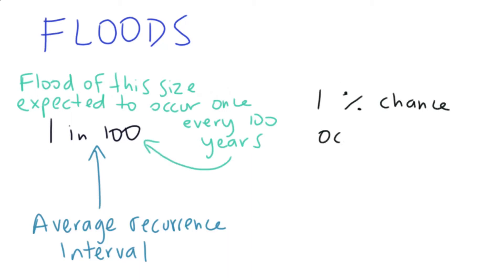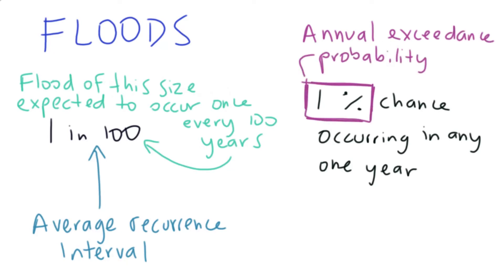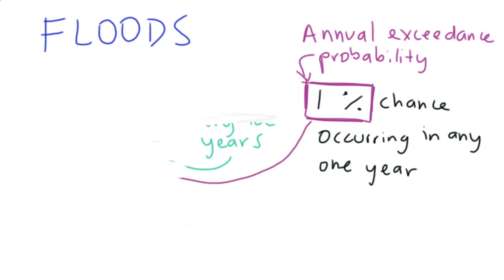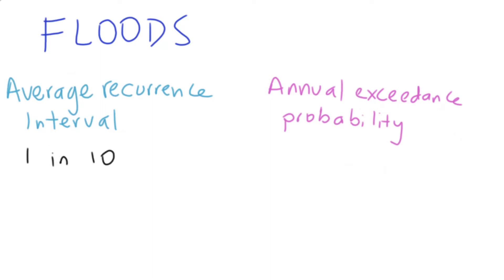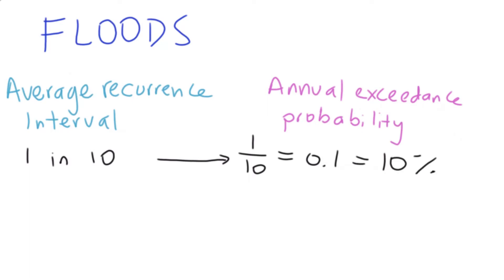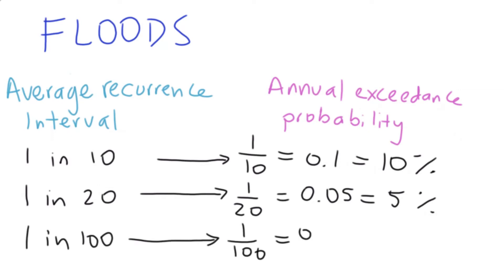A 1 in 100 flood has an annual exceedance probability, or AEP, of 1%, which means that a flood of that size or greater has a 1% chance of occurring in any given year. The annual exceedance probability is calculated by doing 1 over the average recurrence interval. So for an ARI of 10, that is 1 over 10, which is 0.1, or a 10% annual exceedance probability. For an average recurrence interval of 20, we do 1 over 20, which is 0.05, or a 5% annual exceedance probability, and so on.